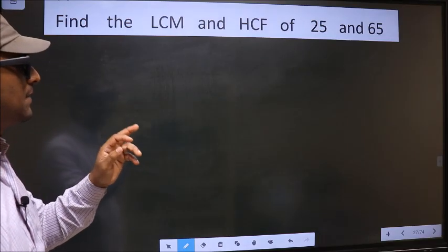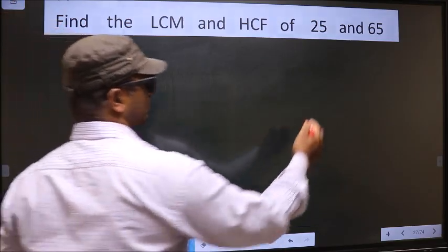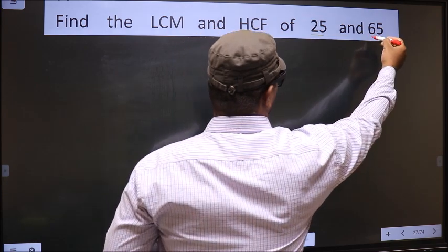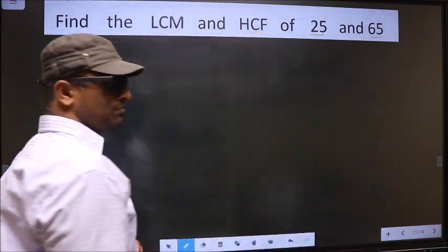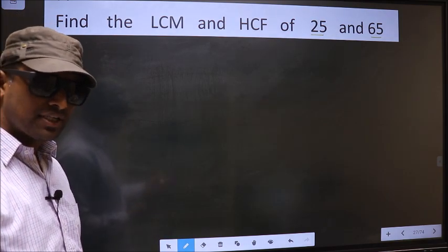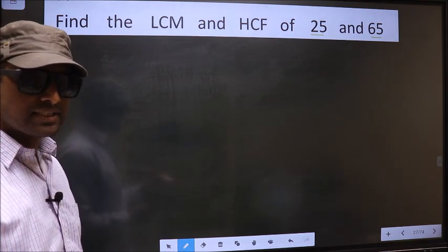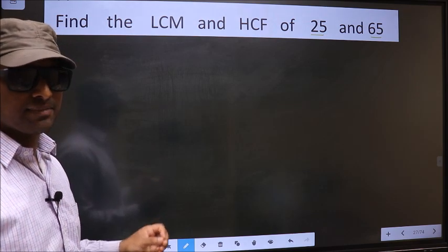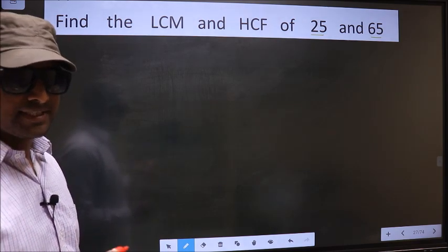Find the LCM and HCF of 25 and 65. To find the HCF and LCM, first we should do the prime factorization of each number separately.